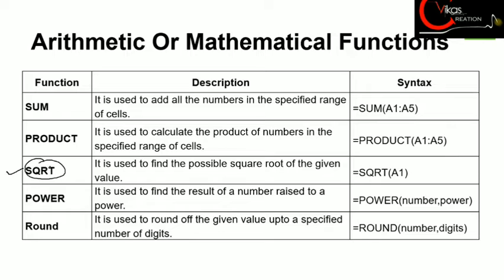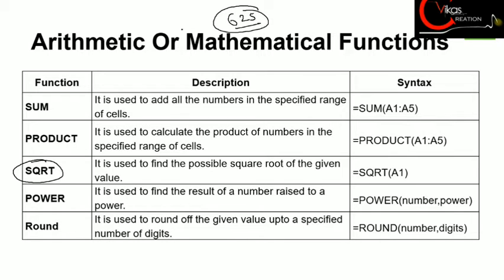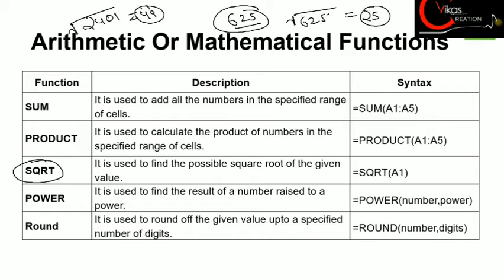Our next function is SQRT, which stands for square root. This function is used to calculate the square root of a number. For example, if you have the number 625, you can use the SQRT function and it will give you 25. Similarly, for 2401, it will automatically calculate the square root as 49. We can use the SQRT function to calculate square root values easily.